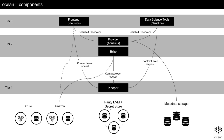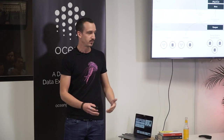This is what our architecture looks like. We have a front end on top that is usable by a browser, or we have data science tools usable by data scientists via command line or whatever. We have a provider that is basically unlocking the data, and we have a keeper that is storing all the information about who purchased what asset, who owns what asset. And I'm going to be talking about the very bottom — there is one word here called secret store. This is what I'm going to talk about today.